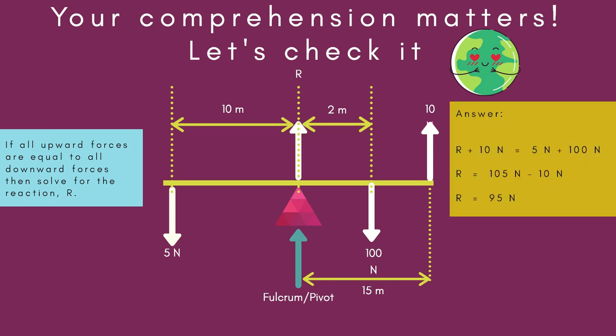The answer is such that all forces going upwards must equal to all forces going downwards. So, R is a force that's going upwards plus the 10 Newtons that's also going upwards in the northern direction. Which will be equal to all the forces going in the southern direction, which will be 5 Newtons plus 100 Newtons. And you will get that R is equal to 105 Newtons minus 10 Newtons. R, therefore, is equal to 95 Newtons.